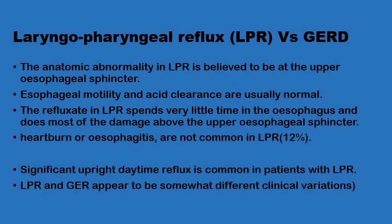One distinct variant is laryngopharyngeal reflux, in which the primary pathology affects the upper part of the oesophagus rather than the distal oesophagus, including the upper oesophageal sphincter. The oesophageal motility and acid clearance would be normal, and the refluxate would spend very little time in the oesophagus itself, with most damage occurring above the upper oesophageal sphincter. As such, they would have little oesophagitis or heartburn, but significant upright daytime reflux. Laryngopharyngeal reflux is considered different from common gastro-oesophageal reflux disease.